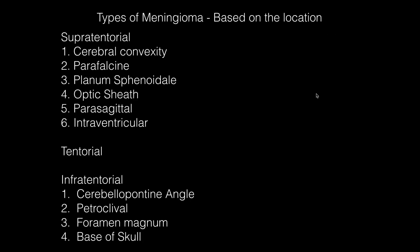Based on location, meningiomas are classified as supratentorial, tentorial, and infratentorial. Supratentorial types include cerebral convexity and parasagittal meningiomas. Infratentorial types include CP angle meningiomas, petroclival meningiomas, and foramen magnum meningiomas.